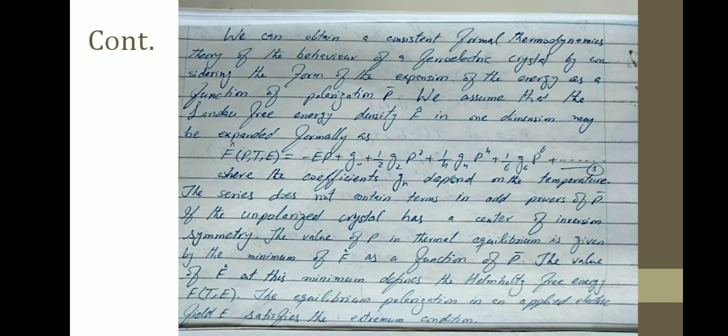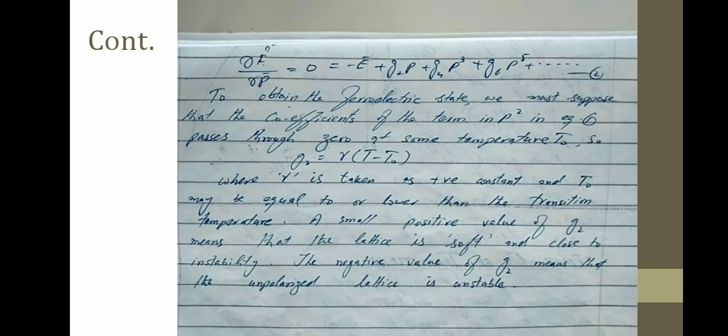The value of F at this minimum defines the Helmholtz free energy as a function of temperature and energy. The equilibrium polarization in an applied electric field E satisfies the extremum condition — the partial derivative of F with respect to P equals zero: 0 = -E + G₂P + G₄P³ + G₆P⁵. This is equation number two, the derivative of equation number one.